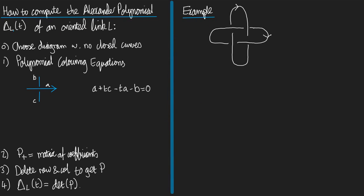The Alexander polynomial is called delta L of t. So L is the link whose Alexander polynomial it is, and t is a polynomial in a variable t. Something I really want to emphasize is that it's of an oriented link L. If you don't orient the link, it doesn't work.